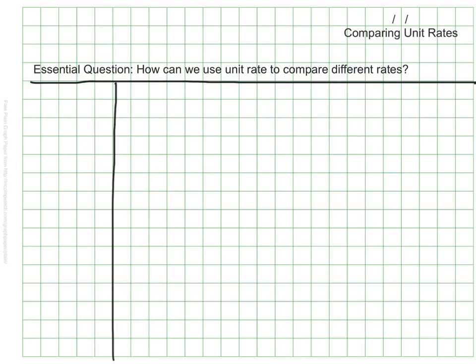Sometimes we want to know who is faster or which item is cheaper. Unfortunately, sometimes the information we are given is hard to compare. Let's look at a few examples.